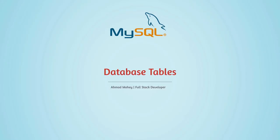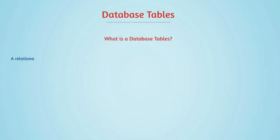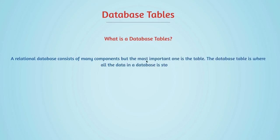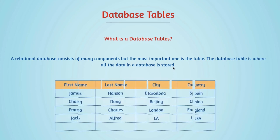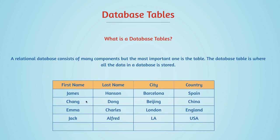Welcome back. In this lecture, we're going to discuss database tables. A relational database consists of many components, but the most important is the table. Without the table, there is no use for the database to exist — it is where all the data is stored, the heart of the database. Here is a simple example: columns are first name, last name, city, and country, and each row contains one person's data.